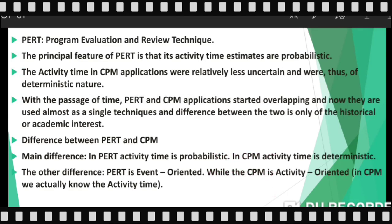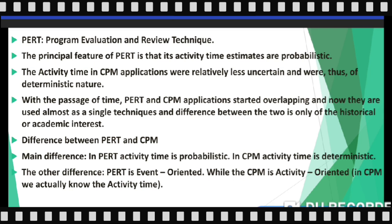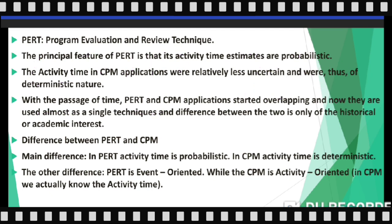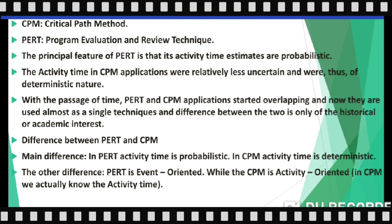In this first slide I have shown two techniques which are used for project management. The first technique is CPM — Critical Path Method — and then we have PERT — Program Evaluation and Review Technique. These are the two techniques which are used to find out project duration.